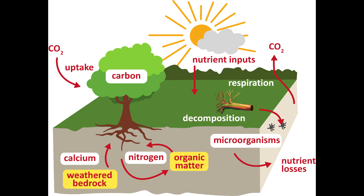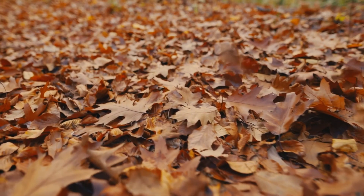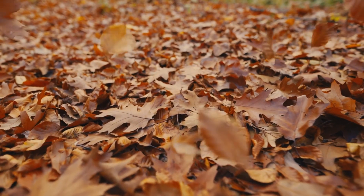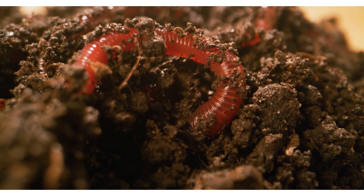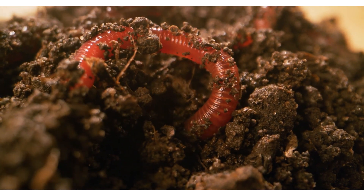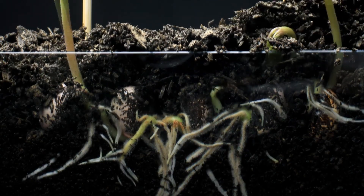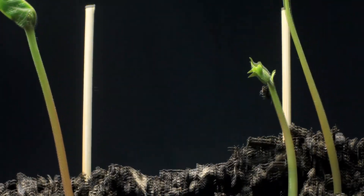Nutrient cycling is an important concept to understand when looking at all these different ecosystems. Nutrient cycling sees plant and animal matter dying, and this is also known as litter. The litter then decomposes and releases nutrients back into the soil. These nutrients are then absorbed by the plant and tree roots.